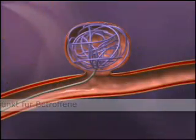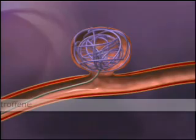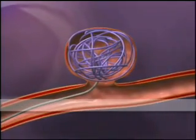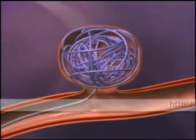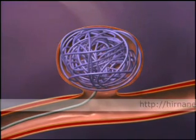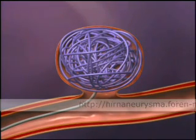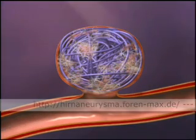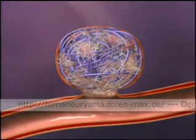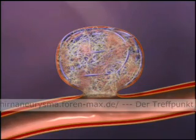The matrix detachable coil deployment continues in the aneurysm. All of the matrix coils have now been deployed into the aneurysm, and the microcatheter is then withdrawn. Optimal aneurysm packing allows for blood stagnation and thrombus formation to occur.